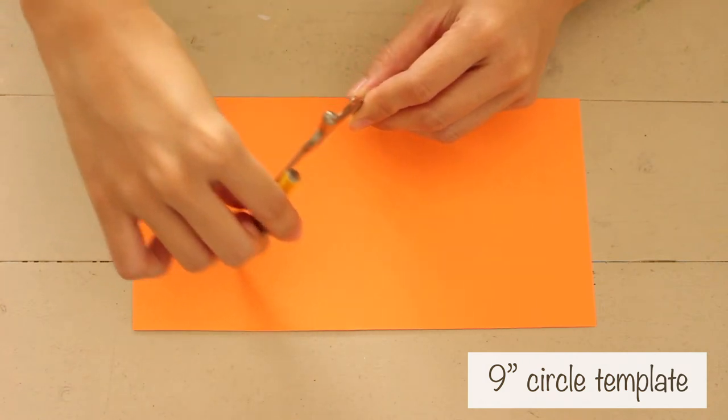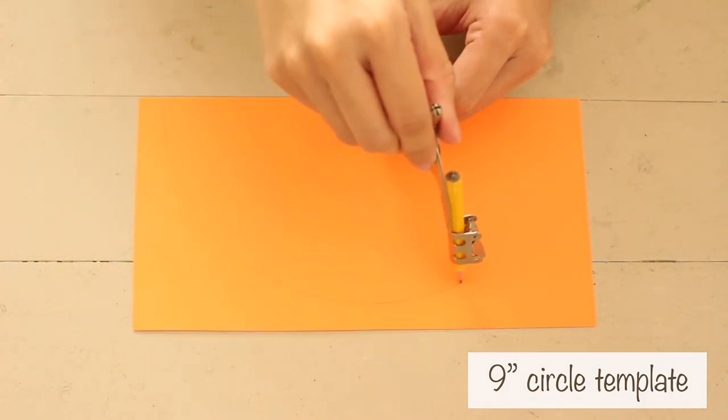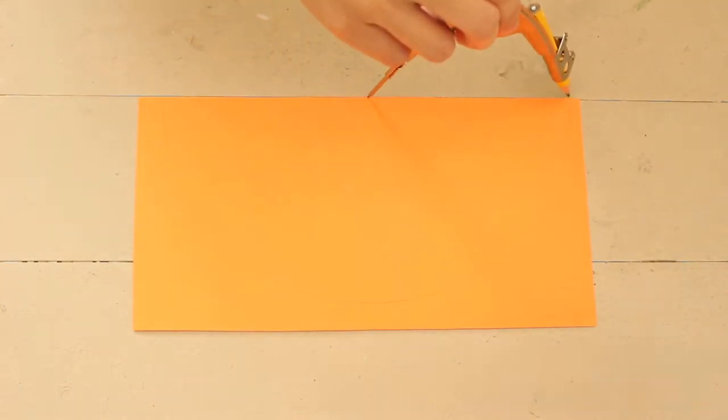Create a 9 inch circle template. I just made a half circle. Trace the circle onto orange felt and cut it out.